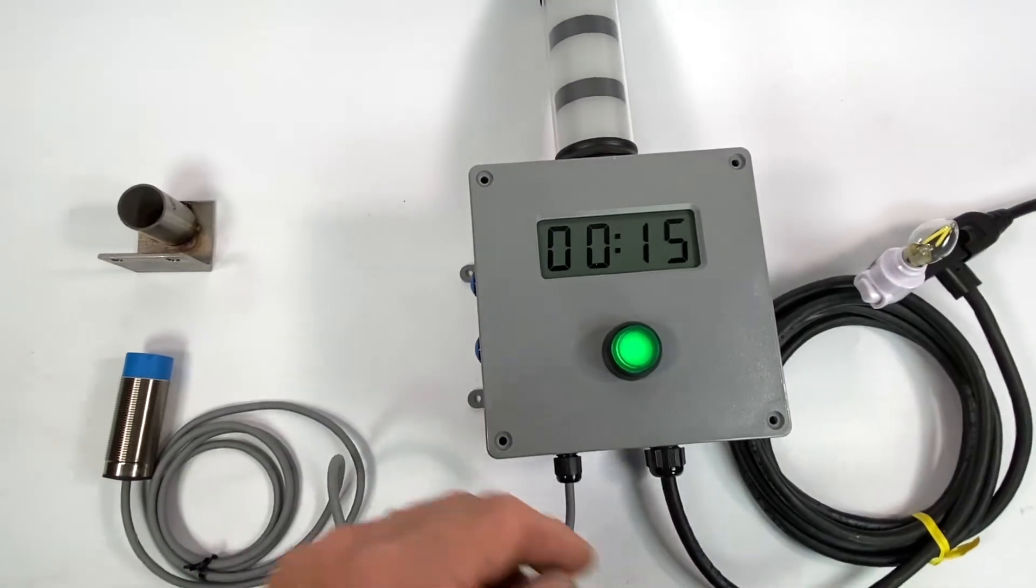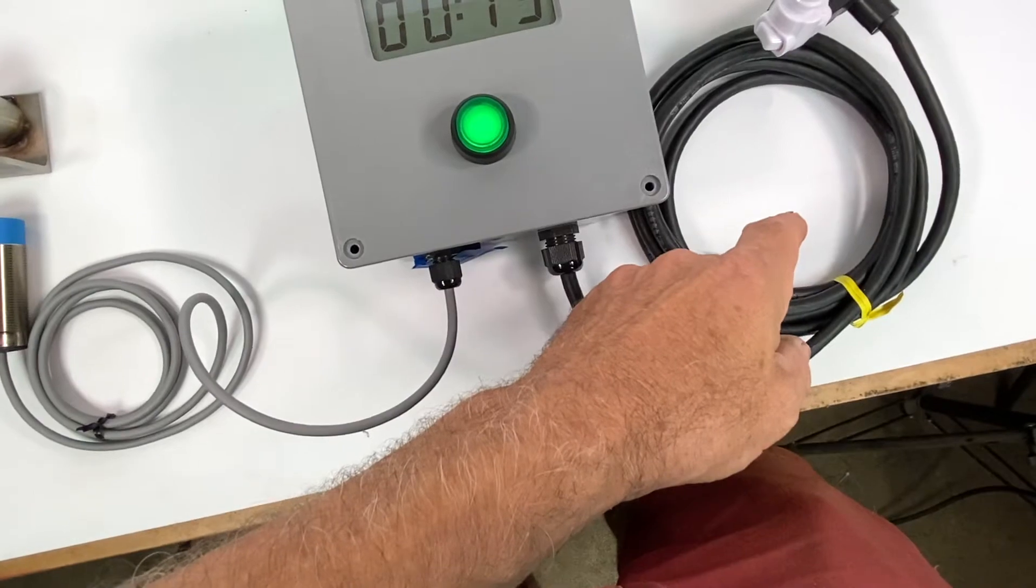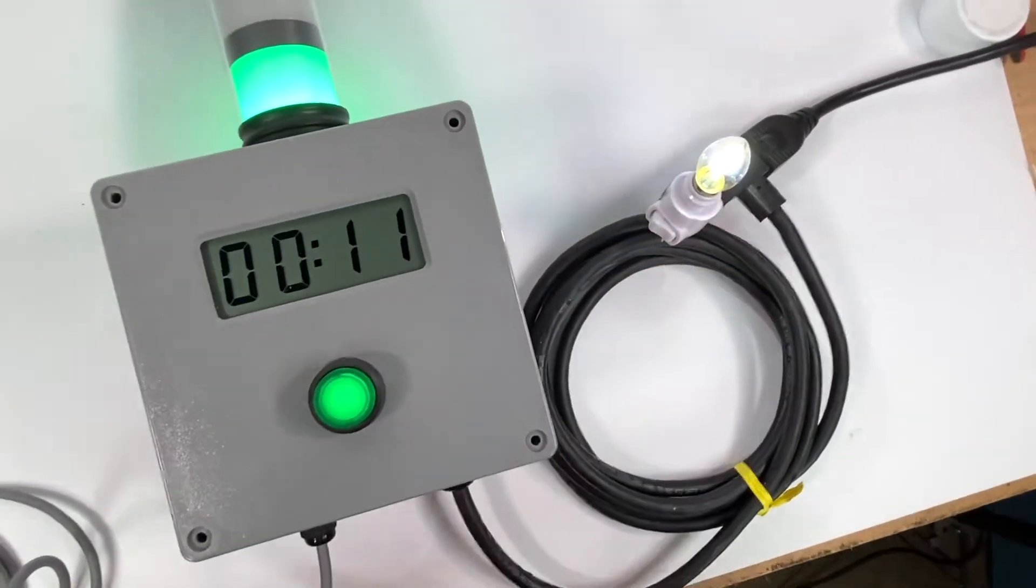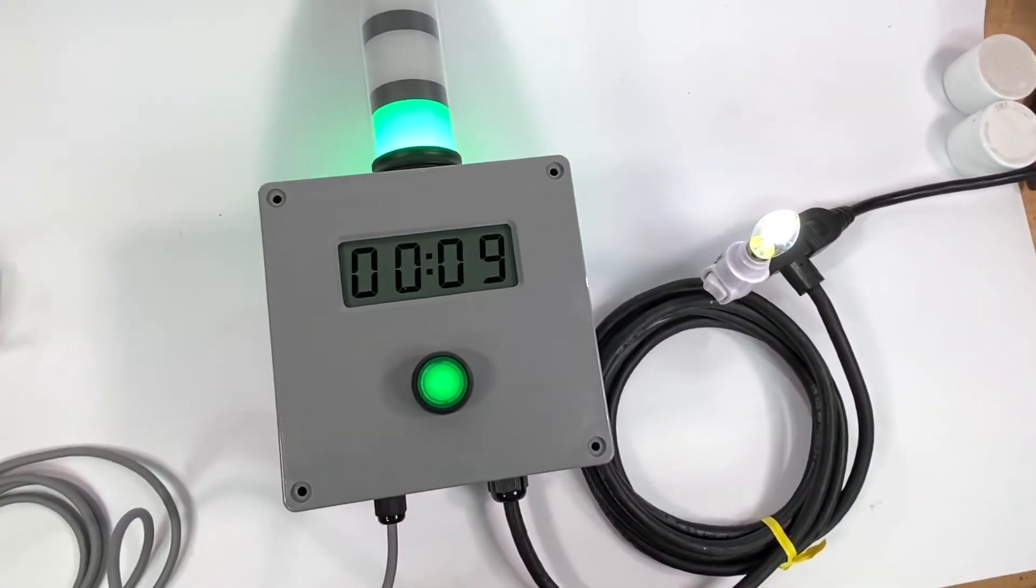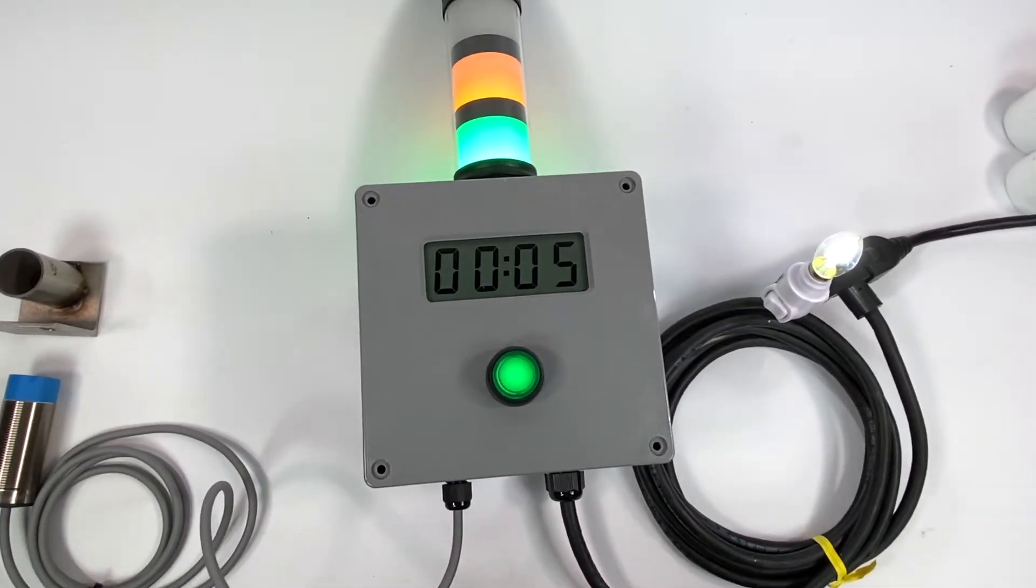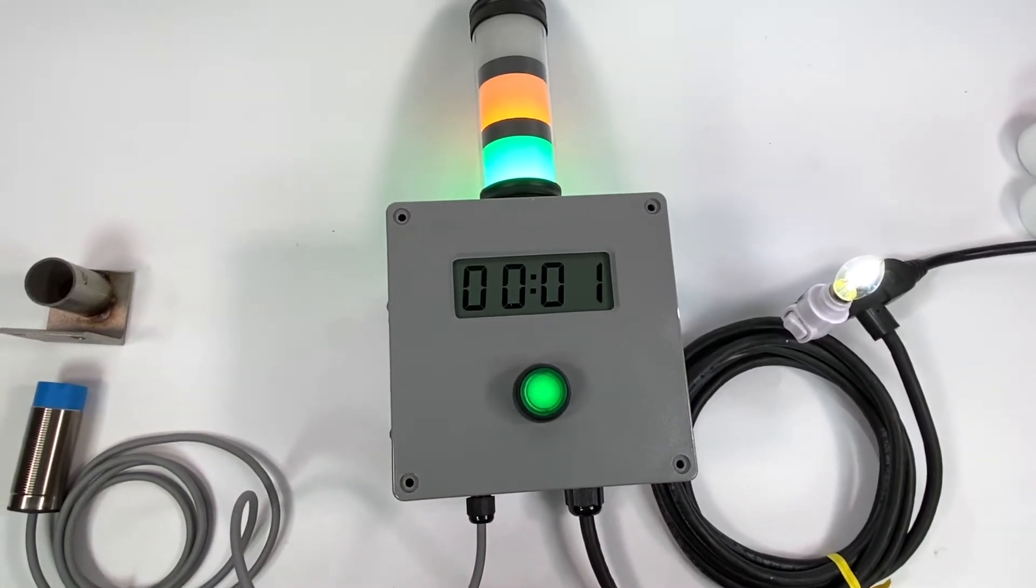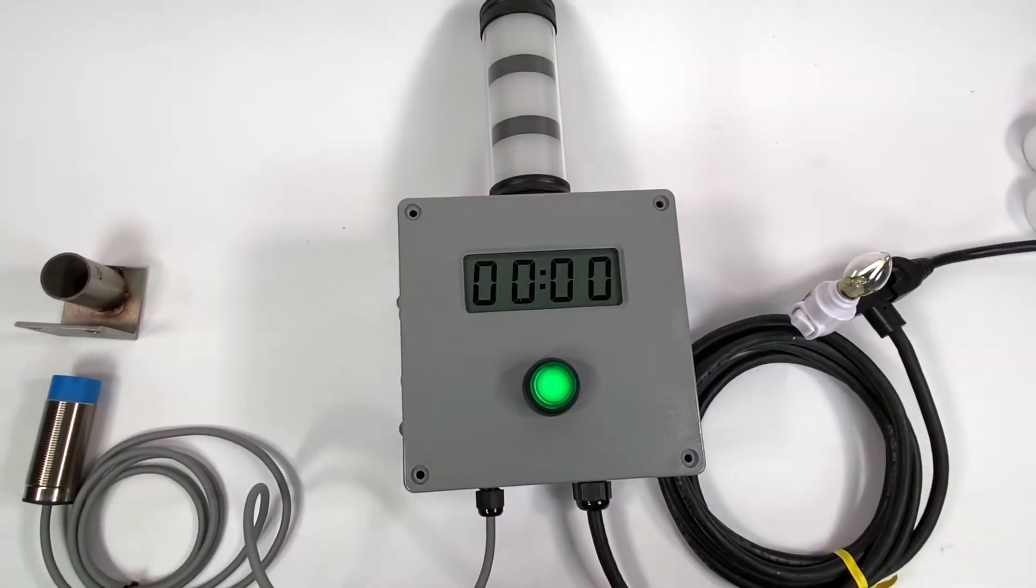Notice also that during the cycle, we'll start another one here, there's a relay output that gives you 120 volts to control or power some other device, and then at the end of the cycle it'll shut off automatically like that.